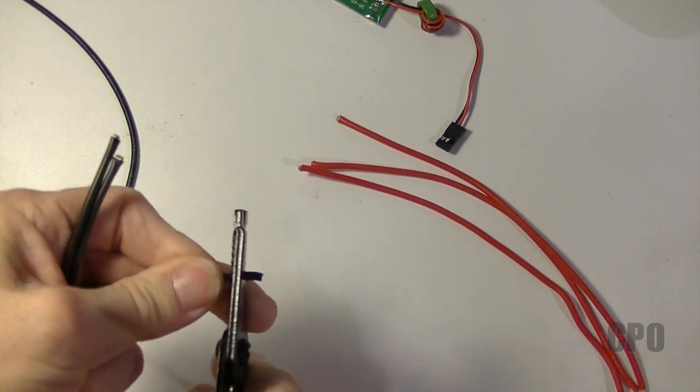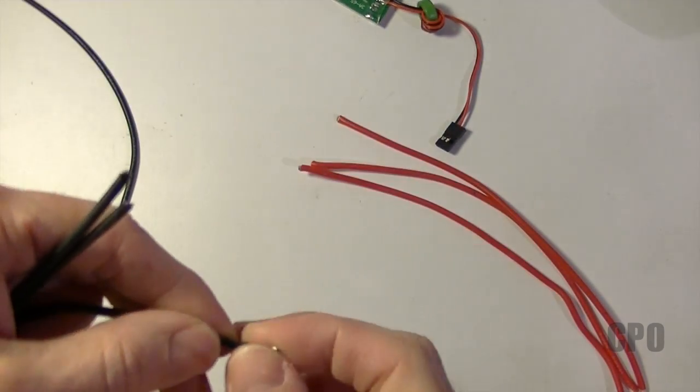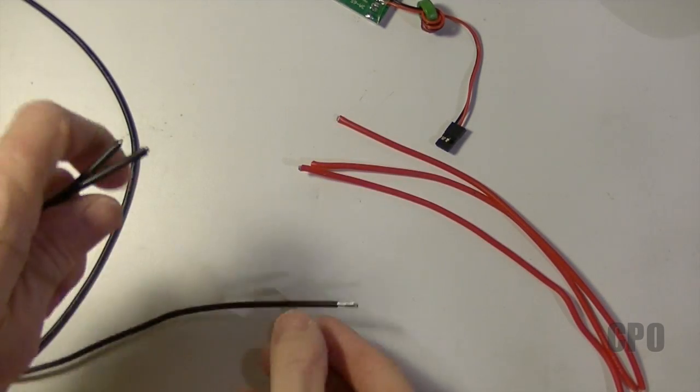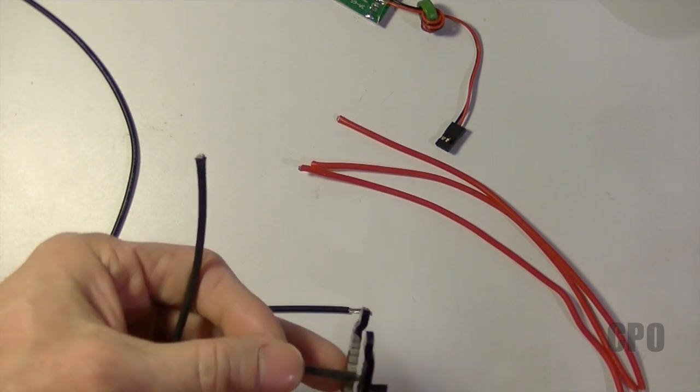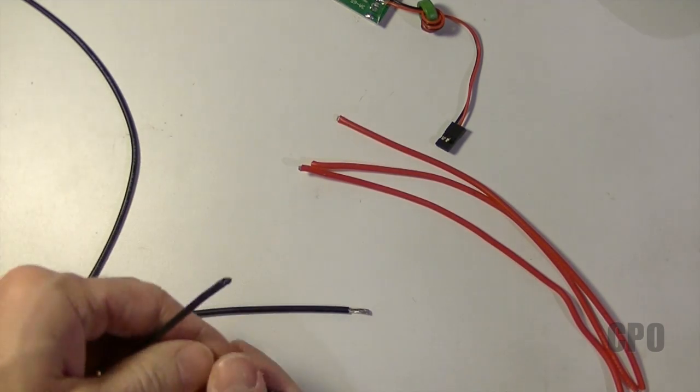So next I need to prep each of the ends of the wires by stripping off enough to be able to connect them all together. So I'm stripping off about 10 maybe 15 millimeters off of each of the wire. Just enough to be able to kind of twist together.